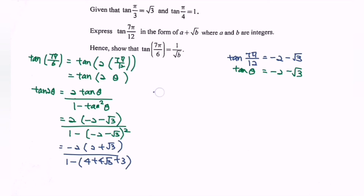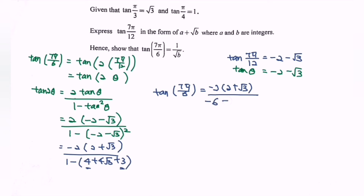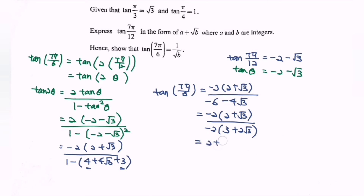Rewriting: tangent(2θ) = tangent(7π/6) = −2(2 + √3) / [1 − 7], where 4 + 3 = 7. So 1 − 7 = −6, giving us −2(2 + √3) / (−6 − 4√3). Rewriting: −2(2 + √3) / [−2(3 + 2√3)]. Simplifying, we get (2 + √3) / (3 + 2√3).